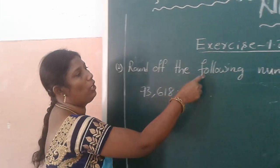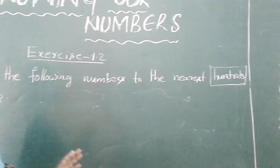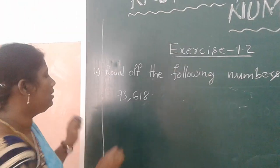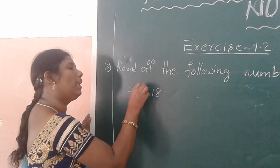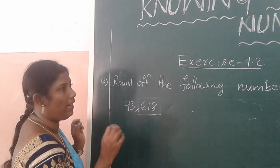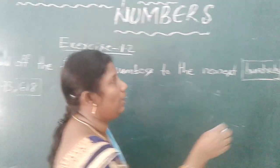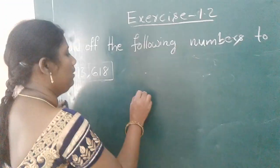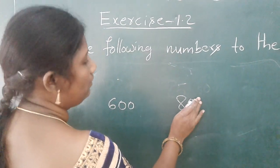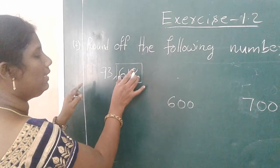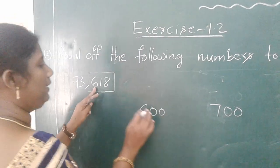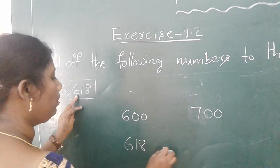Now move to the next model: round up the following numbers to the nearest hundreds. We identify the nearest hundreds. Take the number 93,680. The hundreds digit here is in the 680 part. 680 is between 600 and 700. Is 680 nearer to 600 or 700?